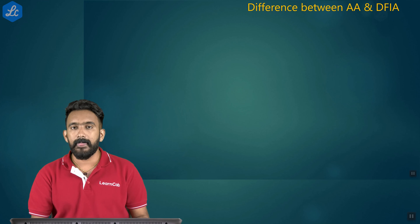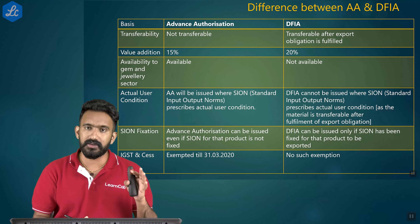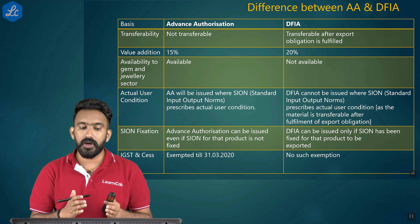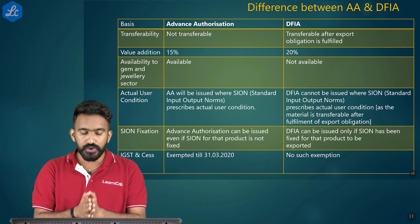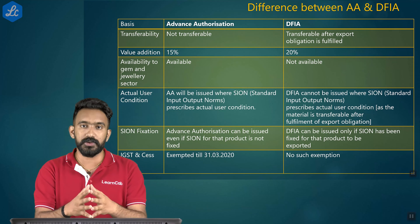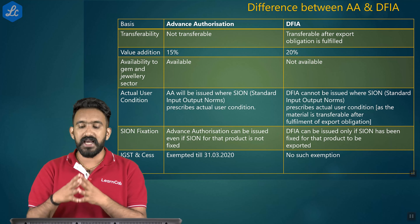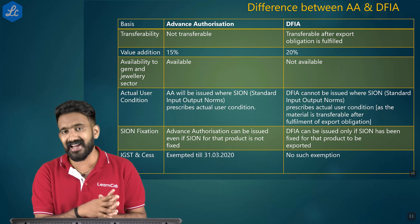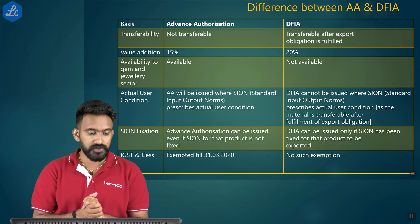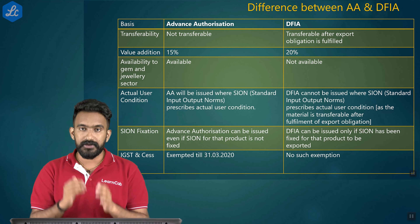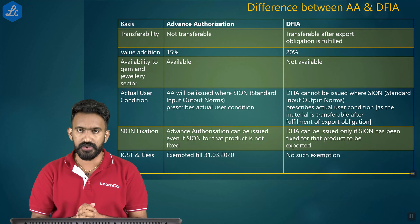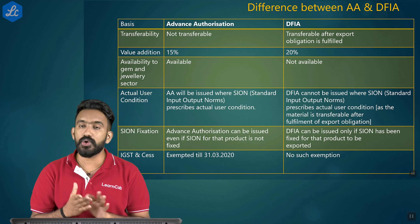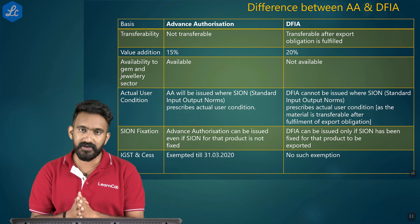Comparison between Advanced Authorization and DFIA: Transferability — Advanced Authorization cannot be transferred; DFIA is transferable after the export obligation is fulfilled. After Advanced Authorization export is completed, the authorization can be sold domestically. Value addition — 15% is required under Advanced Authorization on CIF value of imported inputs; 20% is required under DFIA. Gem and jewelry sector — Advanced Authorization is available to this sector, but DFIA is not.